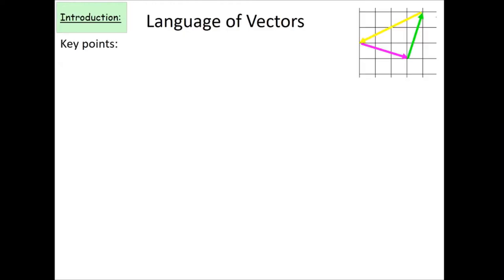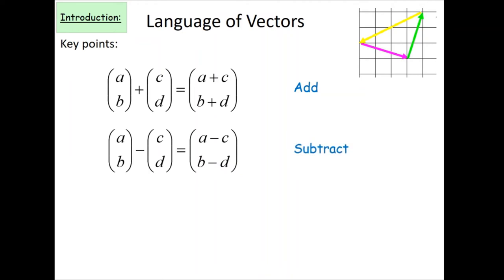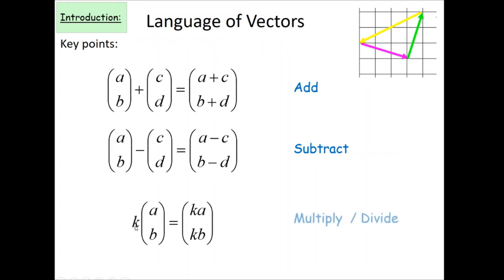For the next part of vectors, we can add vectors by adding the corresponding x and y values together to get the resultant vector. We can also subtract by subtracting the corresponding x and y values. We can also multiply and divide — when multiplying by a number outside the brackets, we multiply both parts by that value. If there is a common factor, we can factorise to take the common value outside.